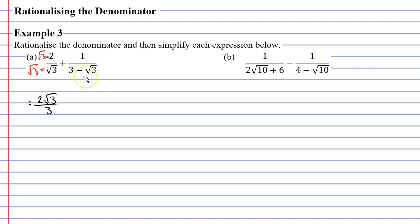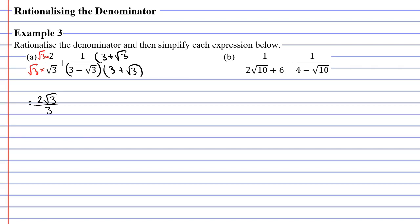Looking at our second fraction, you will notice that our denominator has two terms. We should put brackets around these two terms because we're multiplying this whole expression by something. We're going to multiply it by almost the exact same expression except instead of a minus sign we're going to have a plus sign. We need to multiply the numerator by the exact same thing: three plus the square root of three. One times three plus root three gives us three plus root three.